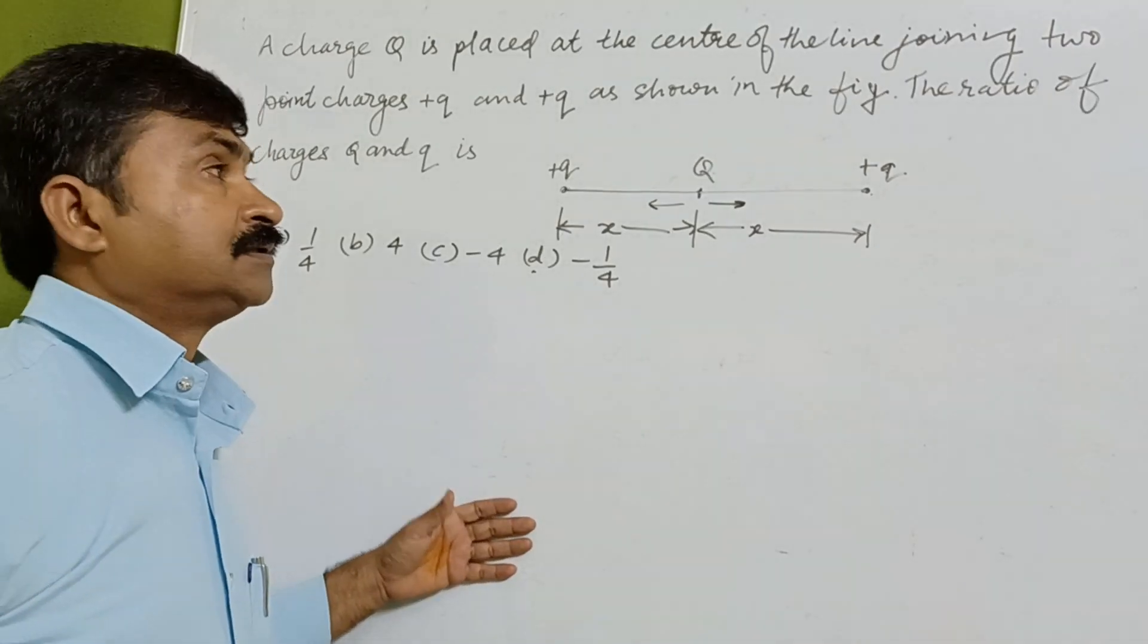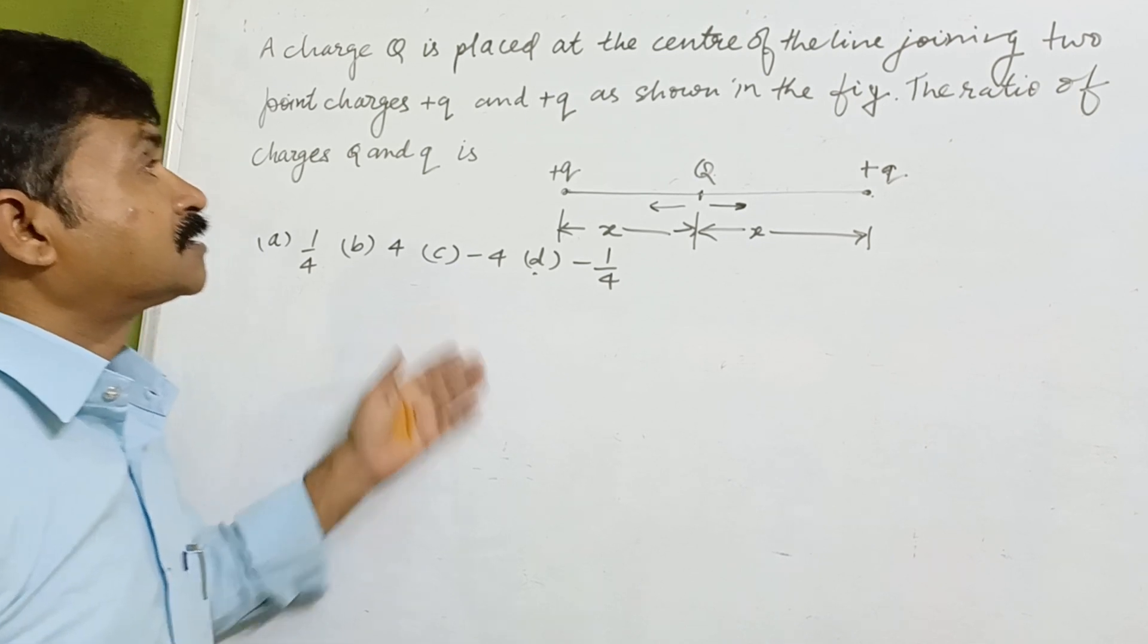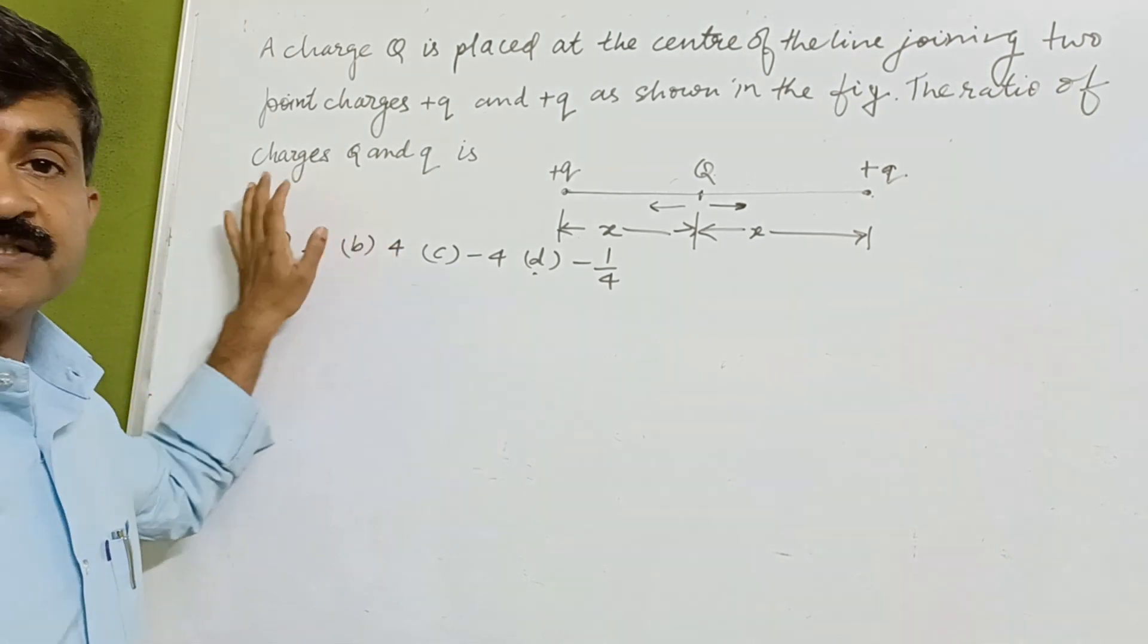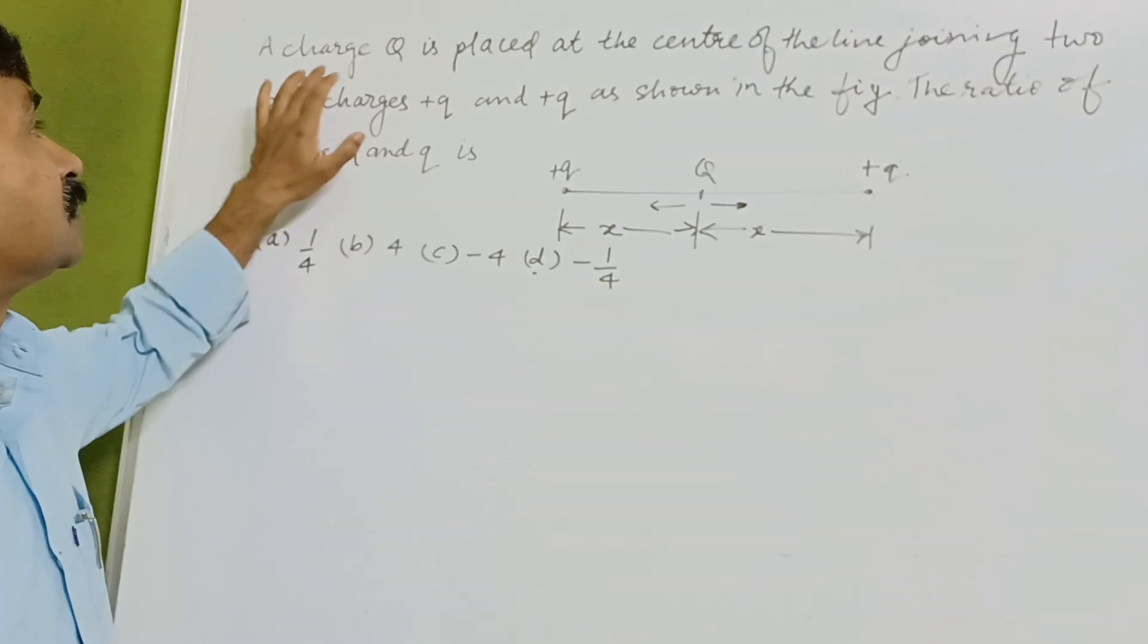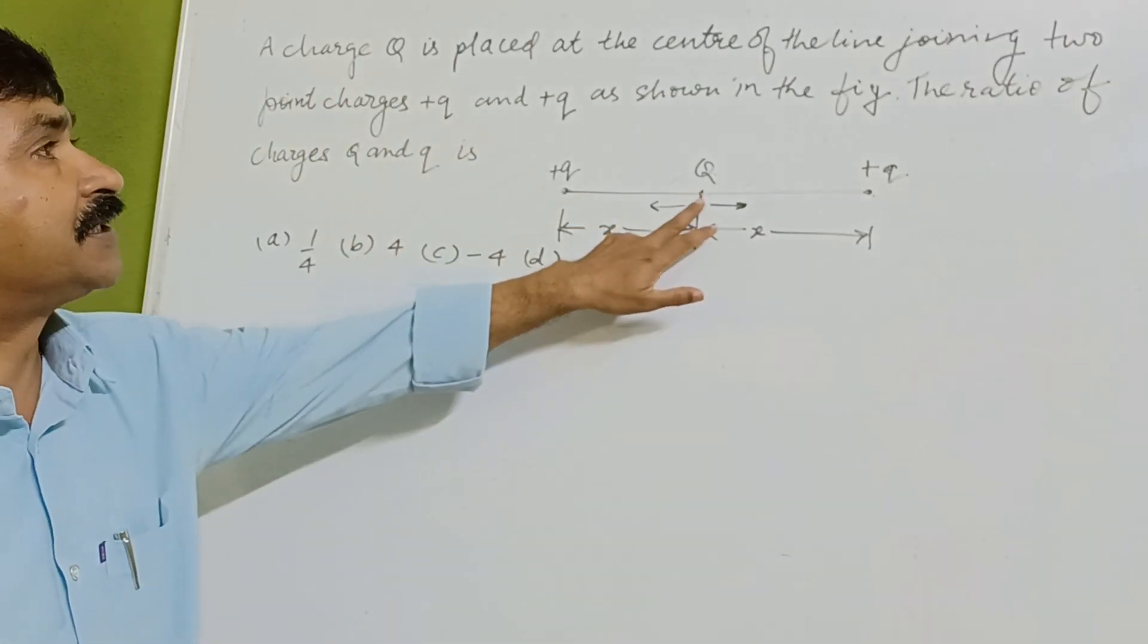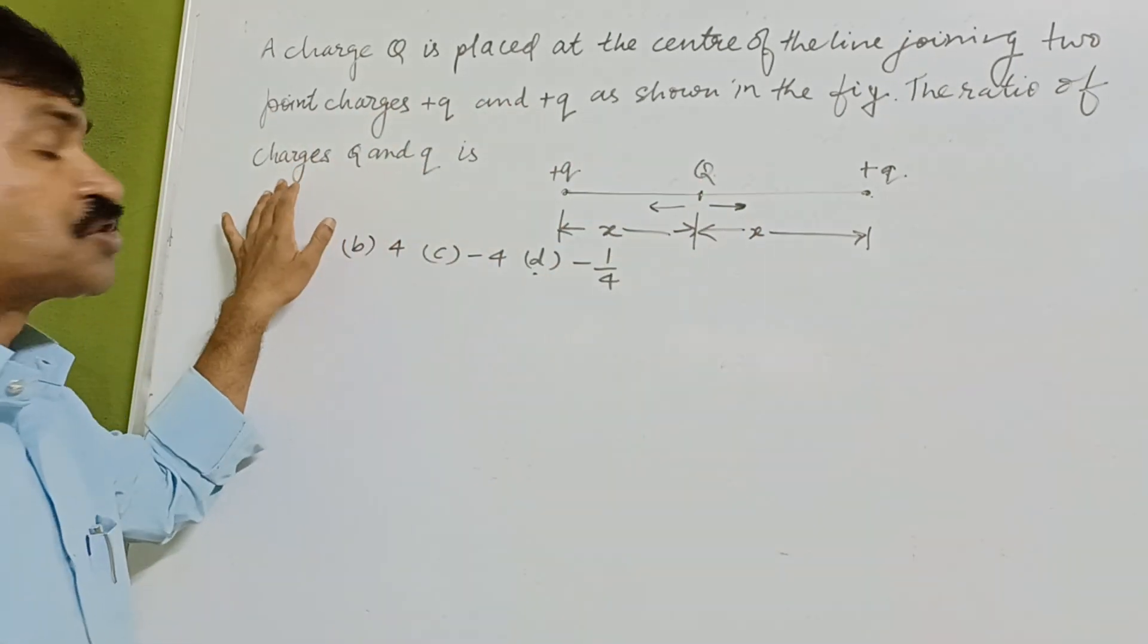Dear students, we are in continuation with the series on numericals in electrostatics. Here the question is: charge Q is placed at the center of the line joining two point charges Q and Q as shown in the figure. The ratio of charges Q and Q is...